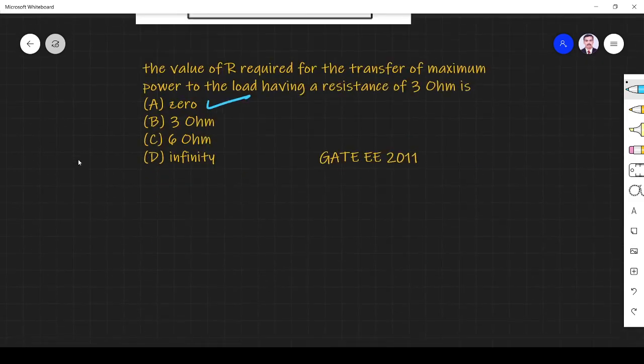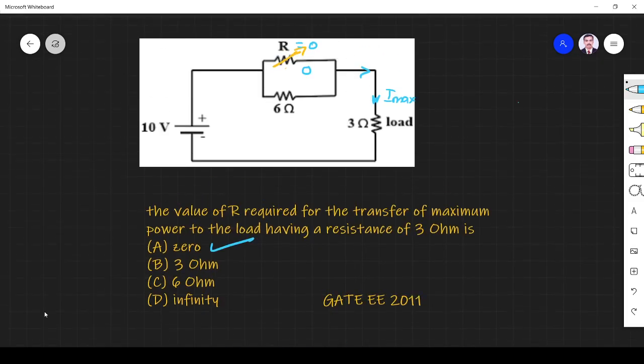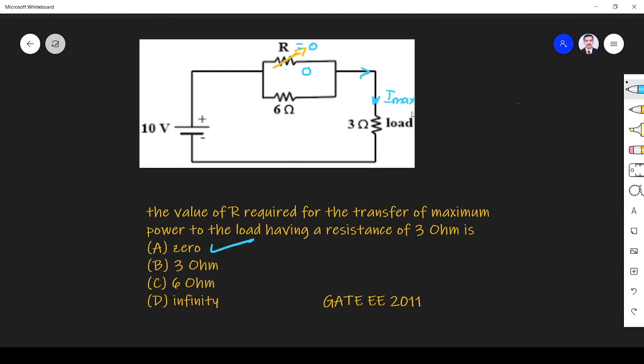But how can we prove that mathematically? For maximum power transfer, we know that R_Thevenin must be minimum, so then only maximum power will be transferred. So we will find the Thevenin resistance. How can we find it? We have to remove the load and remove the source.